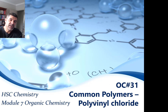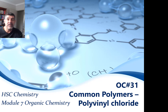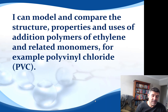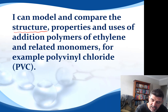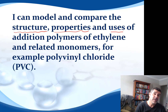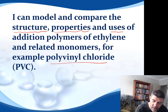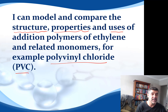Hi students, welcome to HSC chemistry and the organic chemistry module. This is video number 31 and we're looking at our second addition polymer, which is PVC. As we looked at previously, the key things we're looking for here are the structure, the properties, and the uses. Now that we've already looked at polyethylene, we're in a position to see why slightly different monomers produce slightly different polymers and how that affects their properties, structure, and uses.